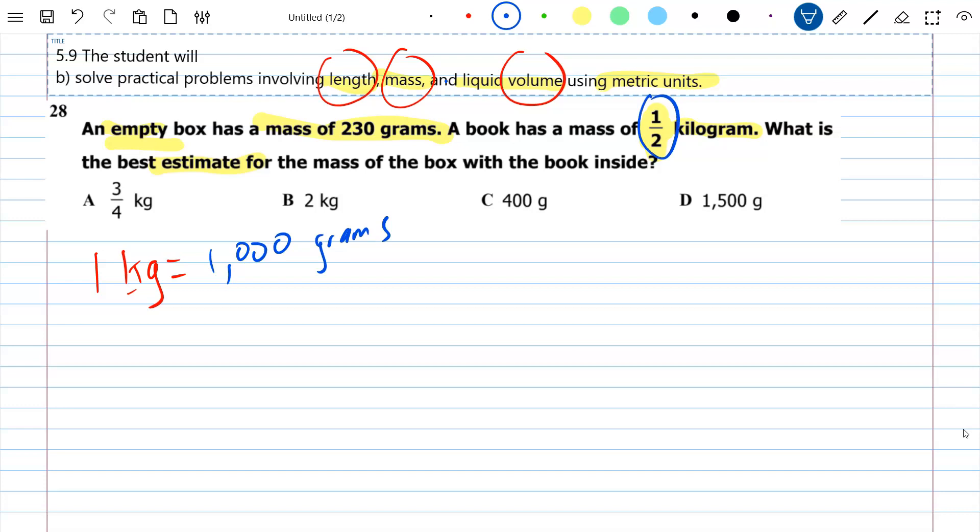And most of you did a good job on this question. This was an 80 percenter for us. You were able to take that thousand and cut it in half. You divide by two and you've got your calculator. You get 500 grams.